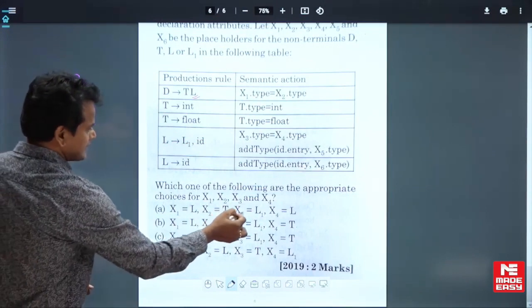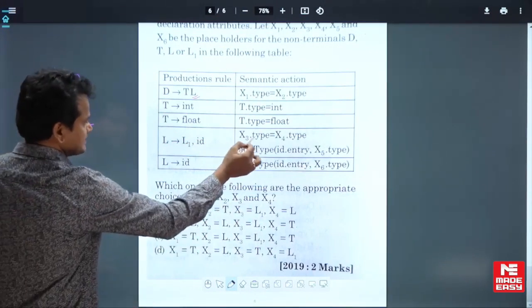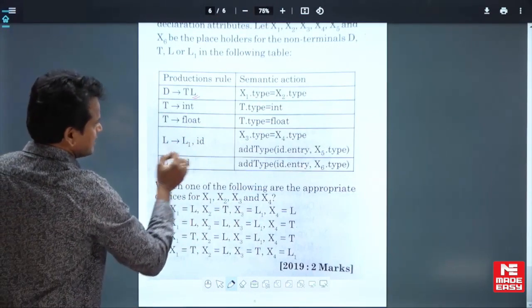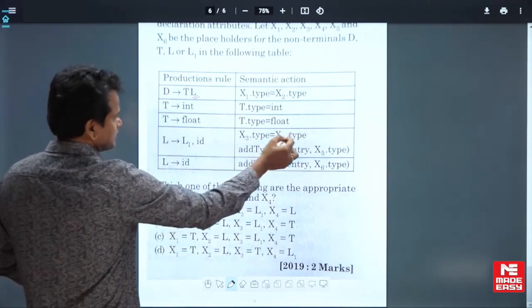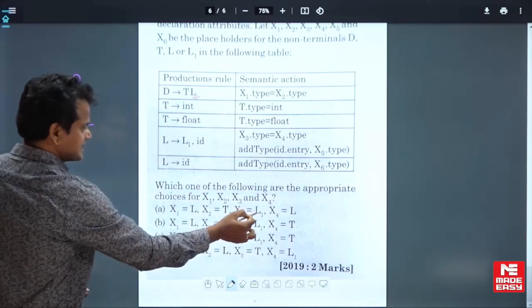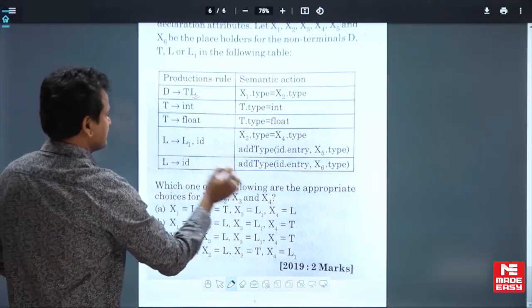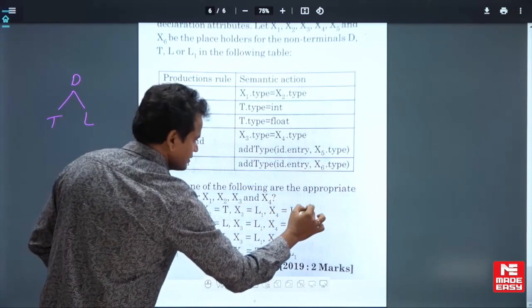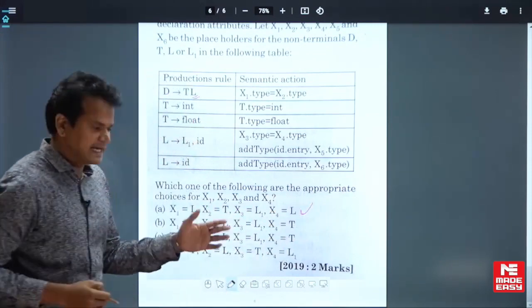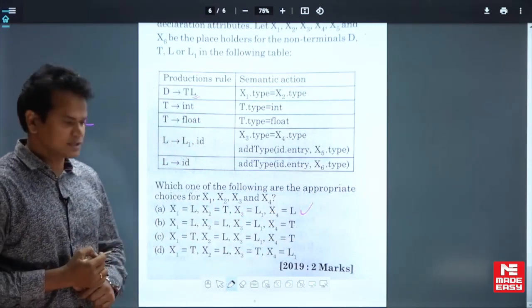Where is x3? Here, in production 3: L goes to L1 comma id. x3.type equals x4.type. What is x3? x3 is given as L1 and x4 is given as L. It can be the correct answer. Let me explain the BCD options also.